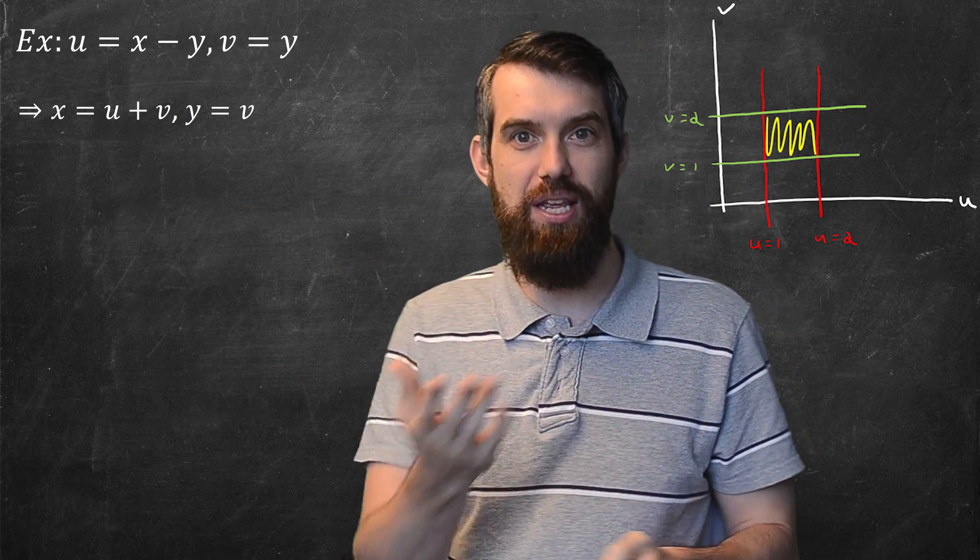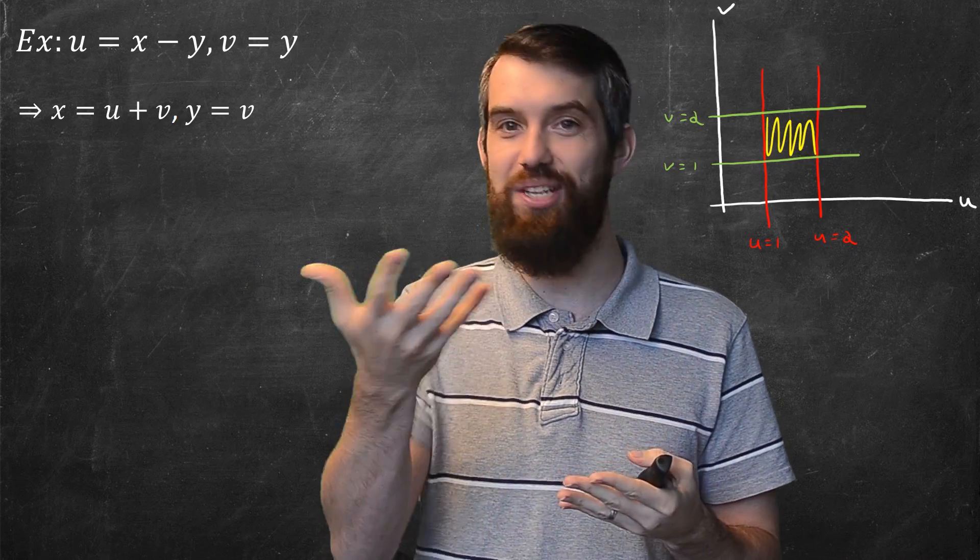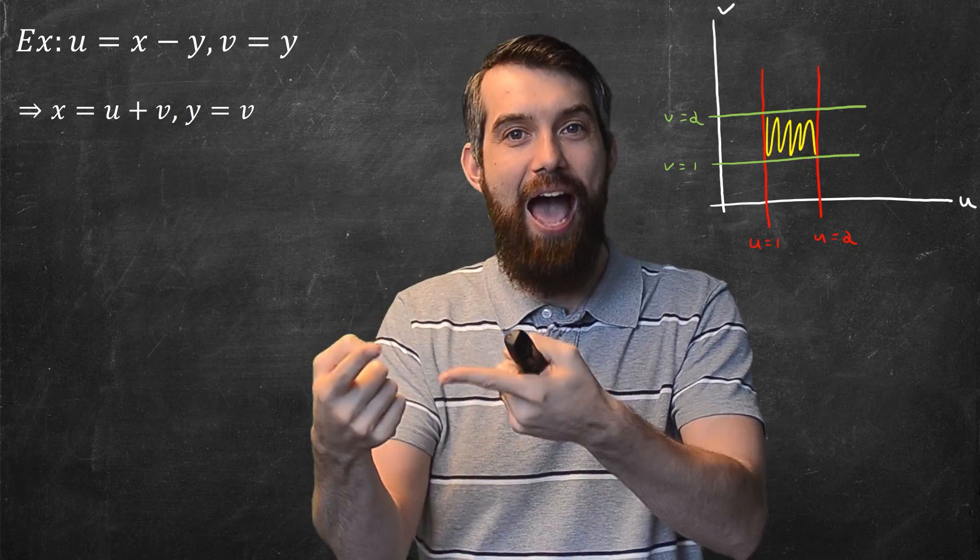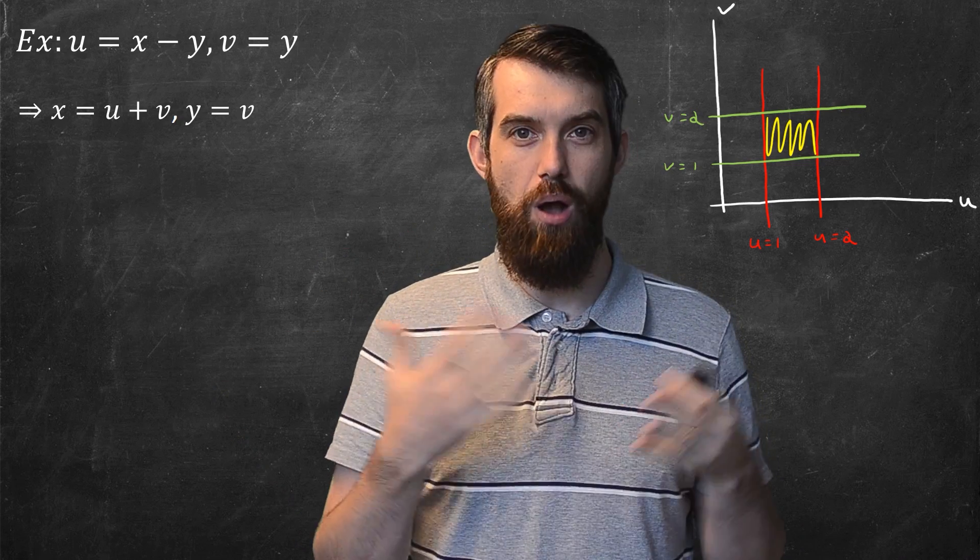First thing I want to do is try to write it in the way that's compatible with my formulas, where I had x as a function of u and v and y as a function of u and v. So I'm just going to take these formulas and rewrite them in that way. And if I do that, of course, y is equal to v is the same thing as v equal to y. I plug that in and I get x is equal to u plus v.